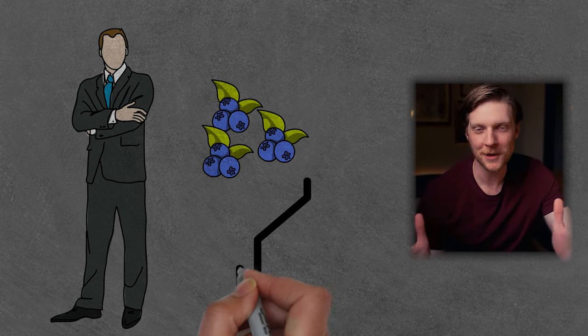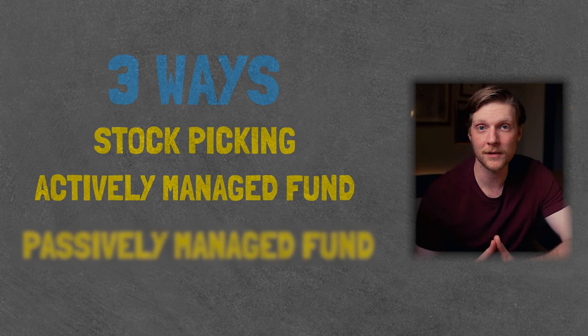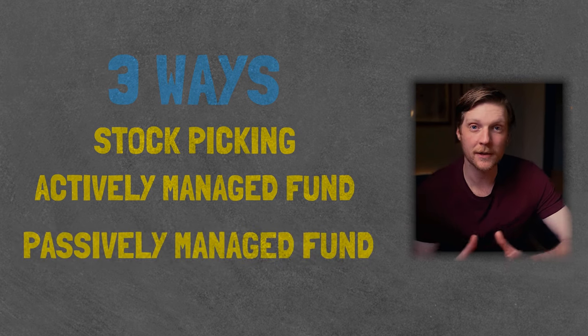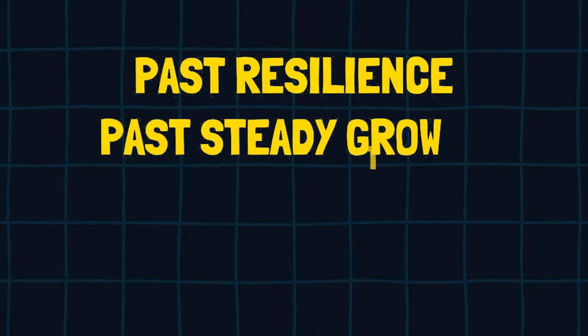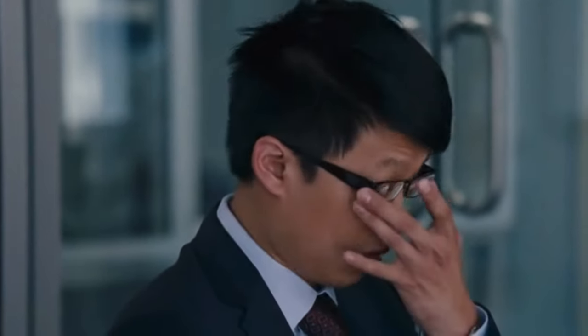Which brings me to the third way to ensure you only eat the tastiest blueberries — you can use a filter. This is analogous to an index fund or a passively managed fund. An index is just a set of criteria that companies must meet in order to make the cut. The filter I'm going to analyze is the dividend growth filter. Companies that consistently grow their dividend exhibit resilience and steady growth. Because passively managed funds use a simple filter, the process of picking companies can be largely automated, so you don't require a team of professionals and the expense ratio will be much lower.